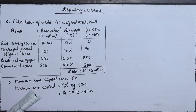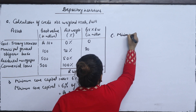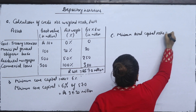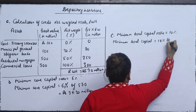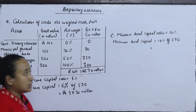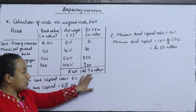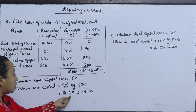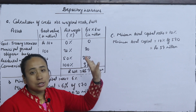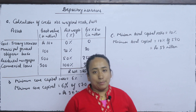What is the minimum total capital requirement? The minimum total capital ratio is 10% of risk-weighted assets. Minimum total capital equals 10% of 570 million, which equals 57 million. To summarize: core capital is 6% of RWA equal to 34.20 million, and minimum total capital is 10% of RWA equal to 57 million. Thank you for today's class.